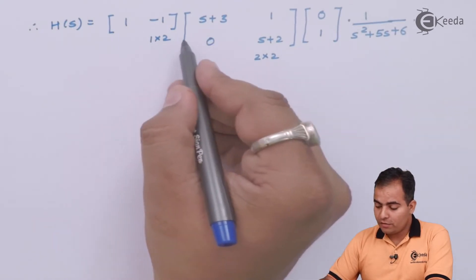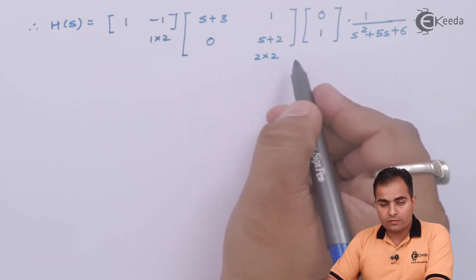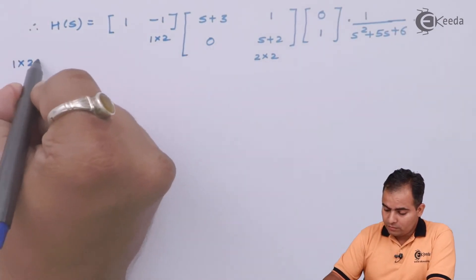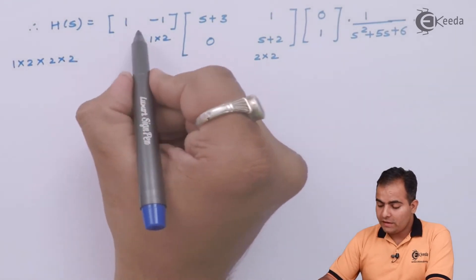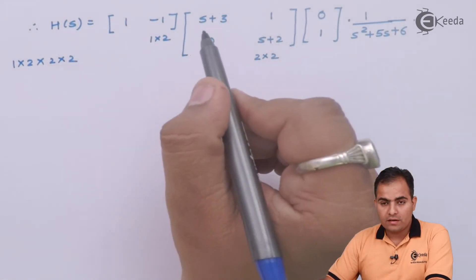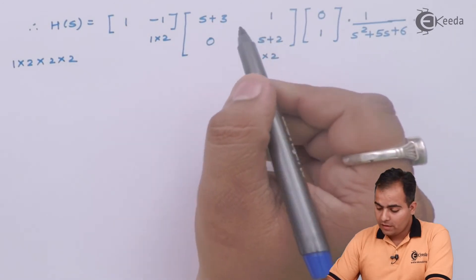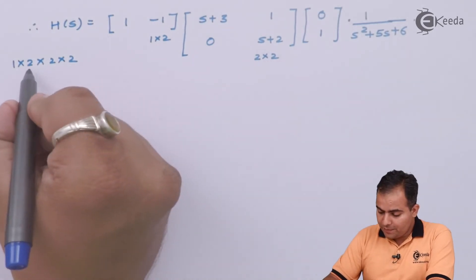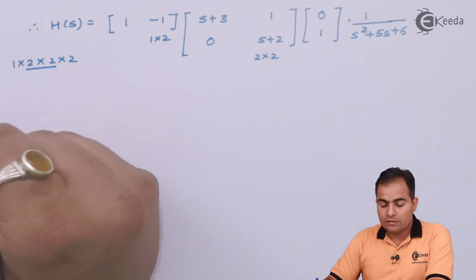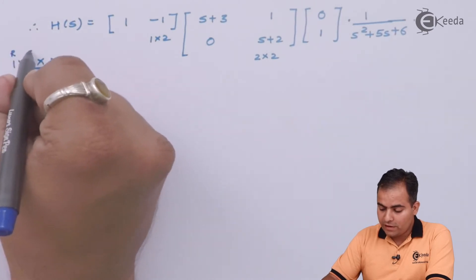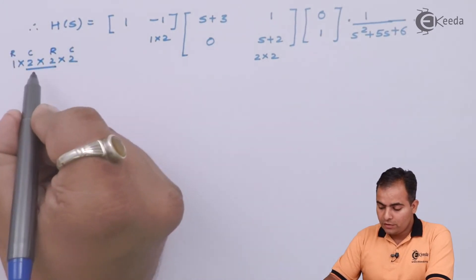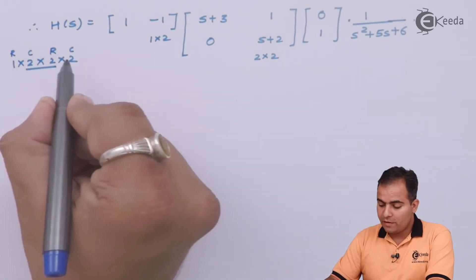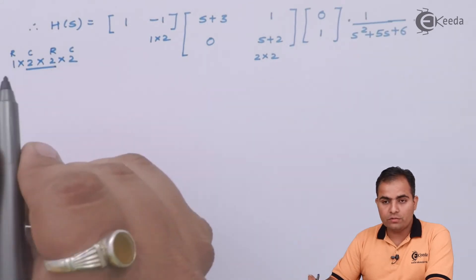The result format is determined by the matrix dimensions: 1×2 multiplied with 2×2. Eliminating the adjacent equal dimensions, the result will be in 1×2 format — 1 row with 2 column elements. Row is always multiplied with column: first element into first plus second element into second.